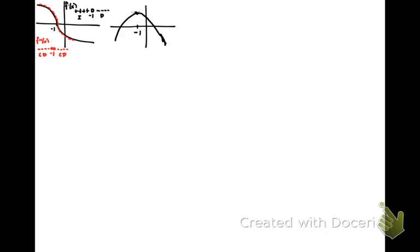Let's consider another graph. This particular derivative has a vertical asymptote at 2. We can see that our derivative has a value of 0 at what appears to be 1.5 and 2.5. So before 1.5, our derivative is positive. After 1.5, our derivative goes negative, and it stays negative to 2.5, and then it becomes positive again.